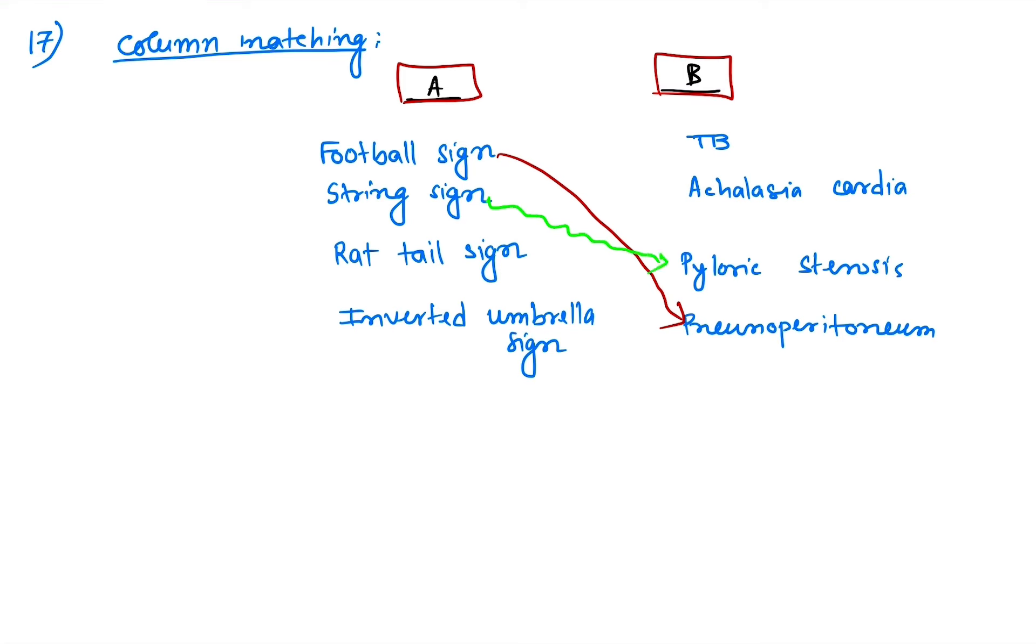Rat tail sign is seen in achalasia cardia, and inverted umbrella sign is seen in tuberculosis. This is the correct column matching.